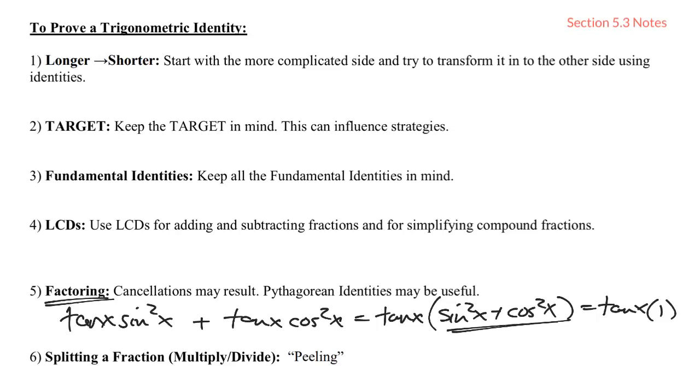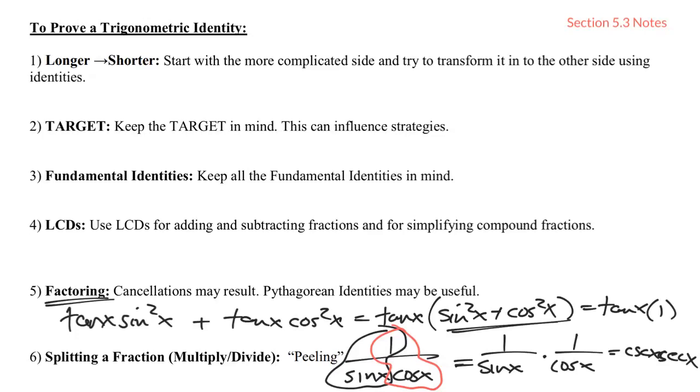Number six is what I call peeling. We also discussed peeling in the previous section. Peeling was whenever we had something like one over sine x cosine x with multiplication going on in the denominator, we could write this as one over sine x multiplied by one over cosine x, which would become using identities cosecant x times secant x. What you're doing there is you're peeling and making that a fraction and then coming in behind that and making this a fraction.